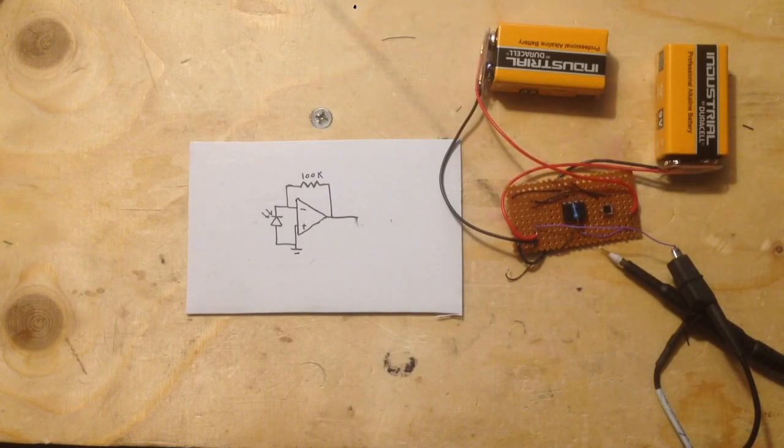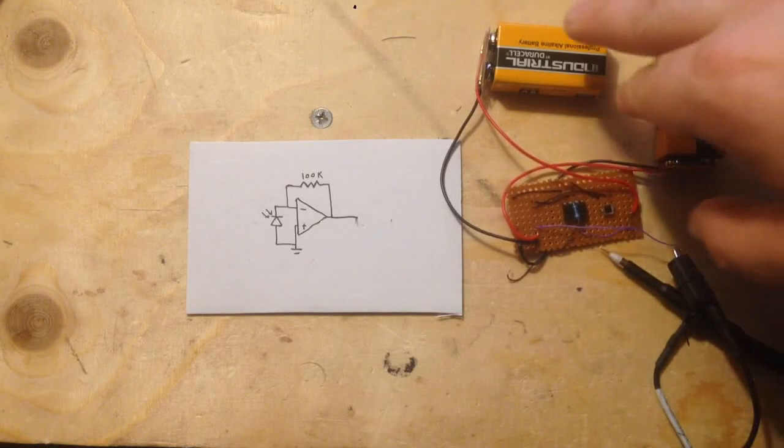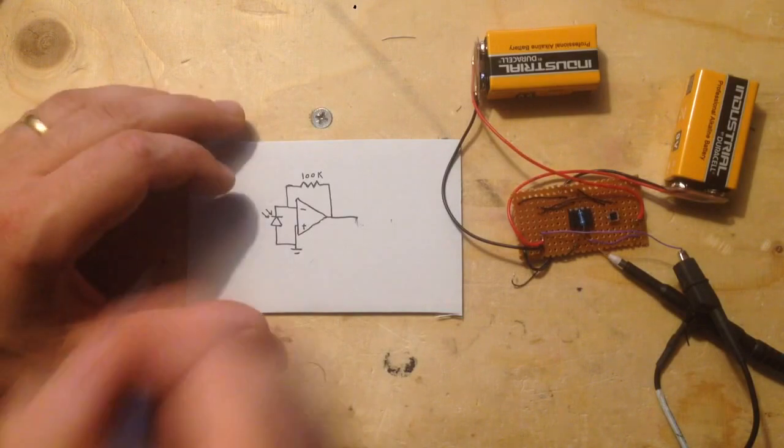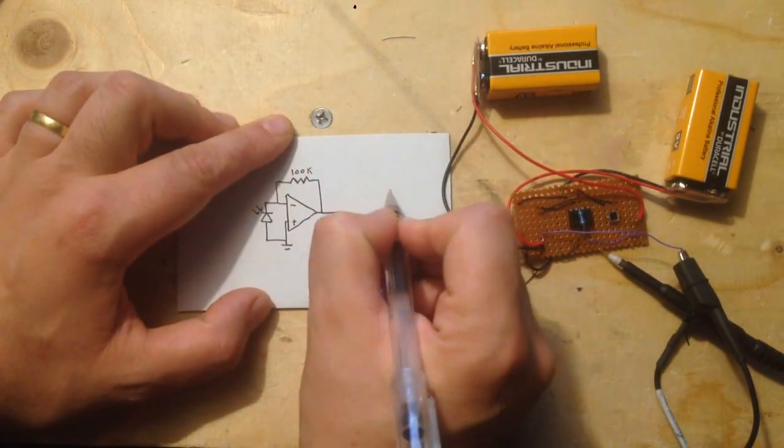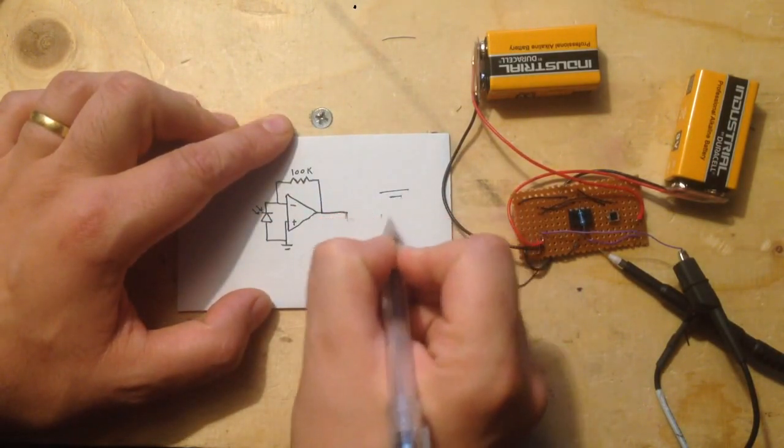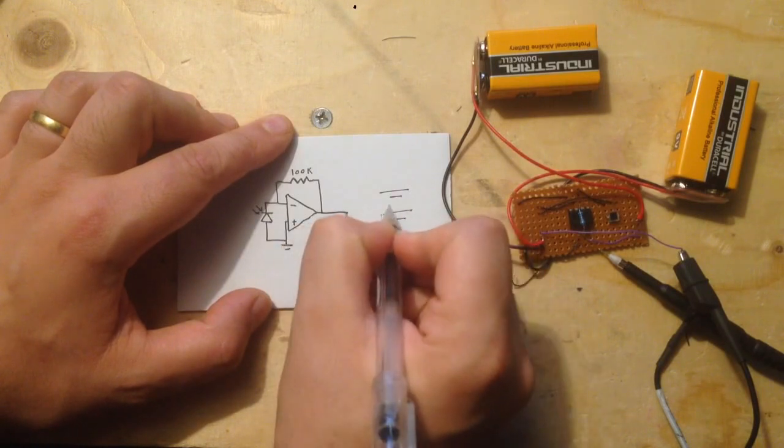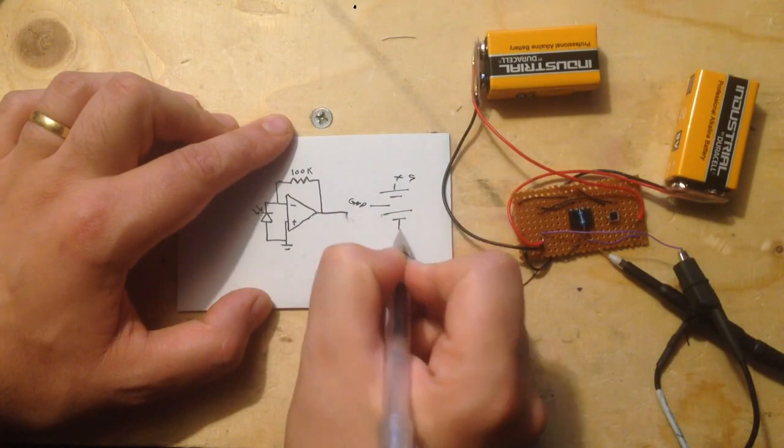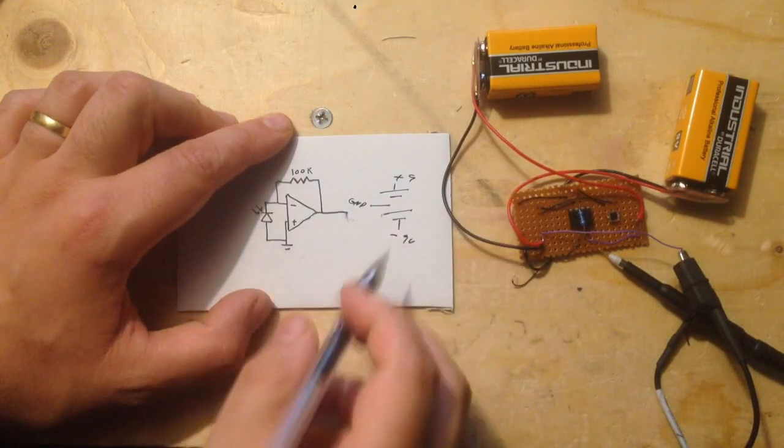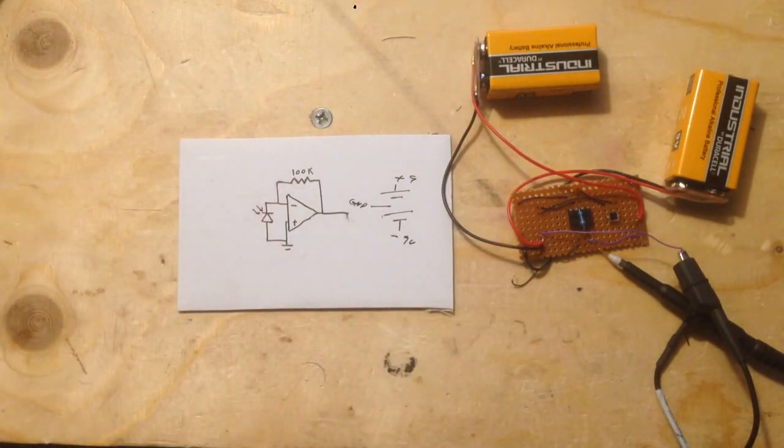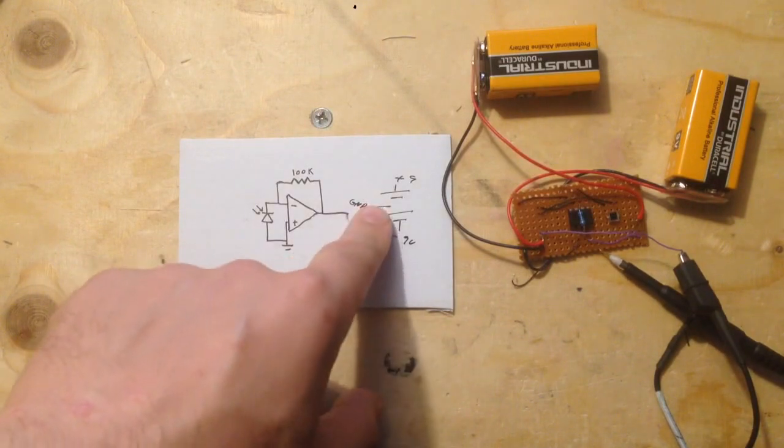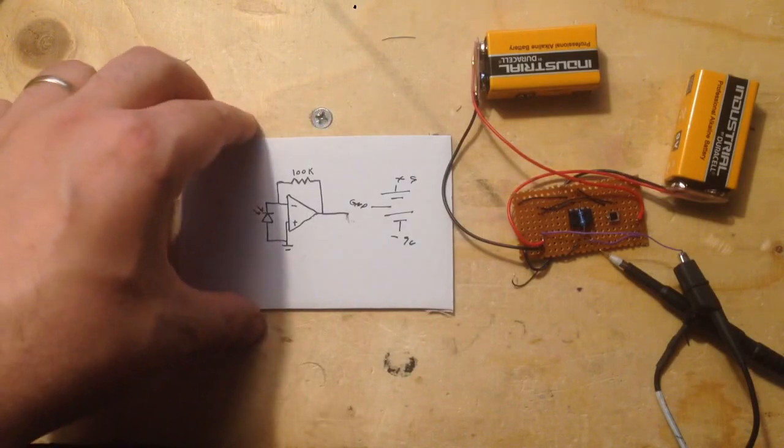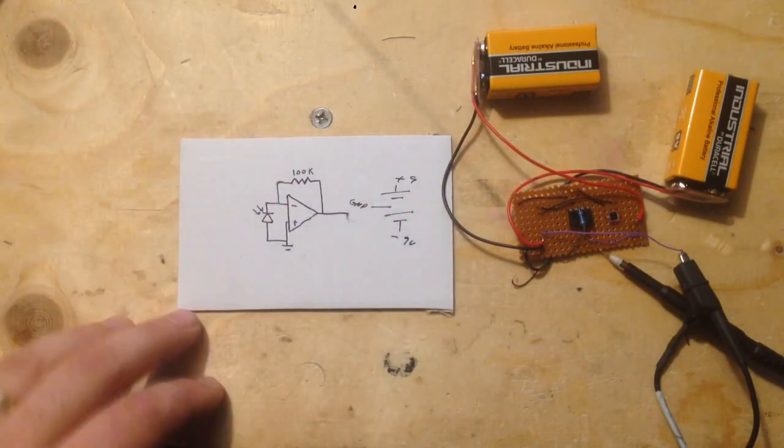But if you don't, a nice easy way to do it is use two 9 volt batteries and then just split them. So you have two batteries and then you set this as your ground point, and then this is your plus 9 and your minus 9. So this becomes your ground point and then you have positive and negative rails. That's what I've done here.